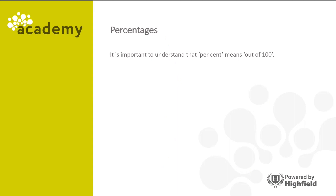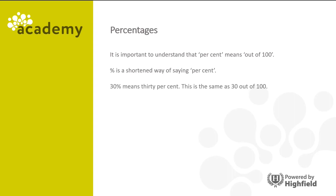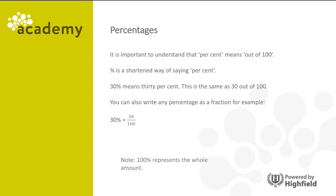It's important to understand that percent means out of 100. The percentage sign is a shortened way of saying percent. So 30 with the percentage sign means 30%, which is the same as 30 out of 100. You can also write any percentage as a fraction — for example, 30% equals 30 one-hundredths. Note: 100% represents the whole amount.